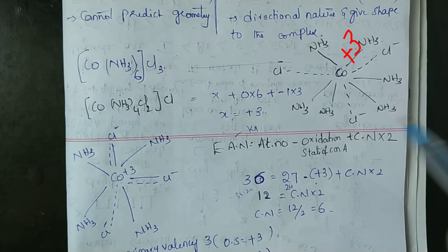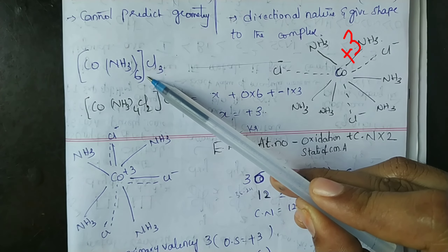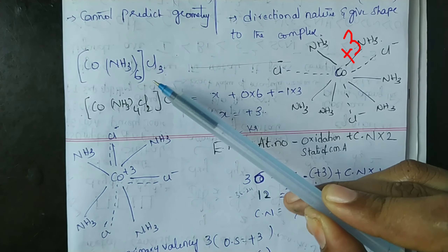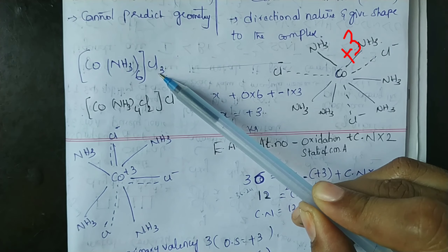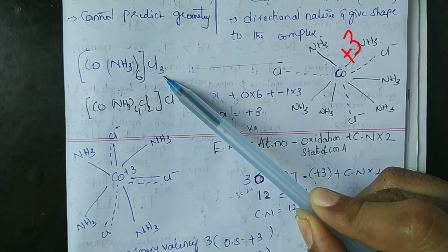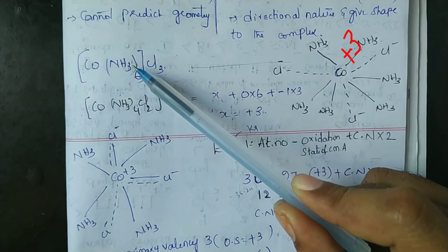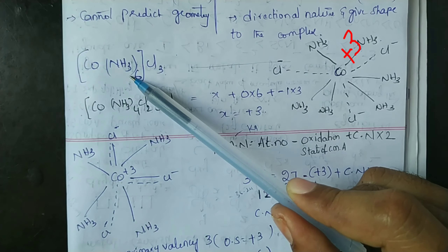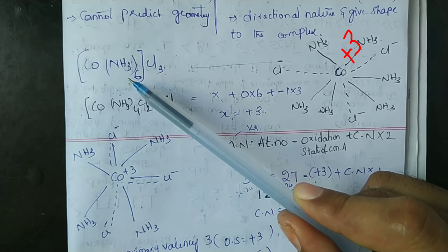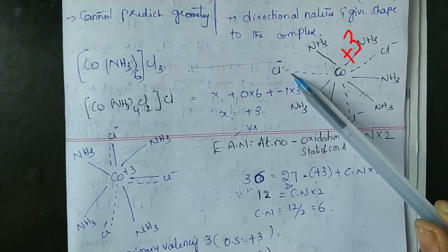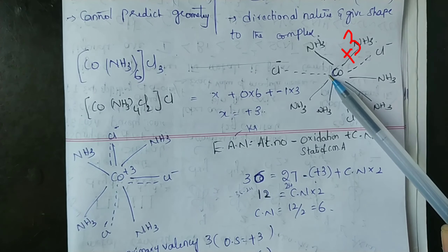For example, in Co(NH3)6Cl3, the negative ions that satisfy valency outside the coordination sphere are shown as dotted lines (ionizable bonds).